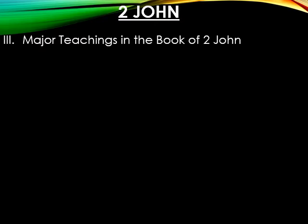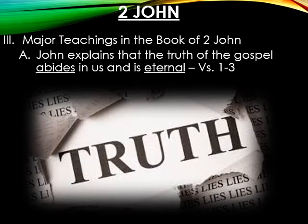Now let's look at the major teachings in the book of 2 John. The first thing John explains is that the truth of the gospel abides in us and is eternal. In the first three verses, John uses the word truth — the Greek word aletheia — four times, each time referring to the gospel of Jesus Christ. Two great principles are that this truth is abiding and indwelling in us, and it is eternal, giving us assurance of our eternal security.